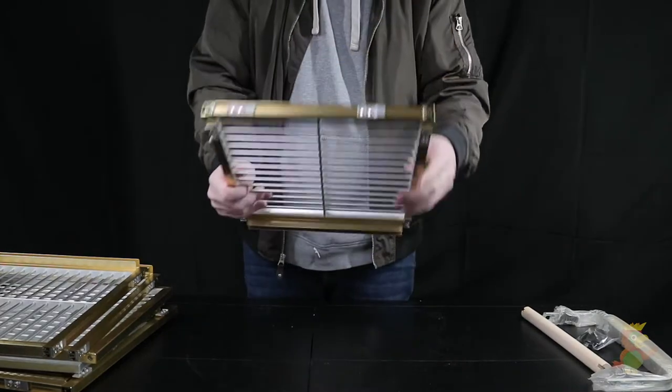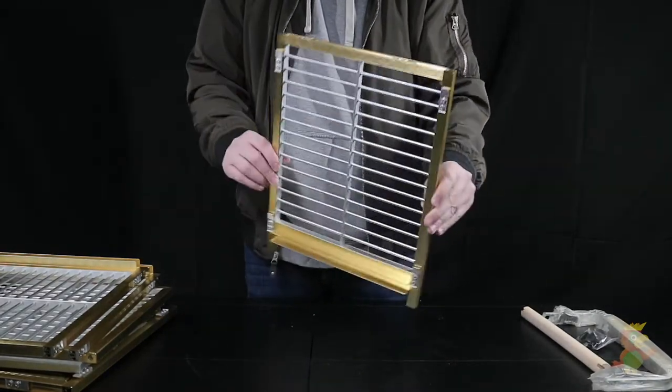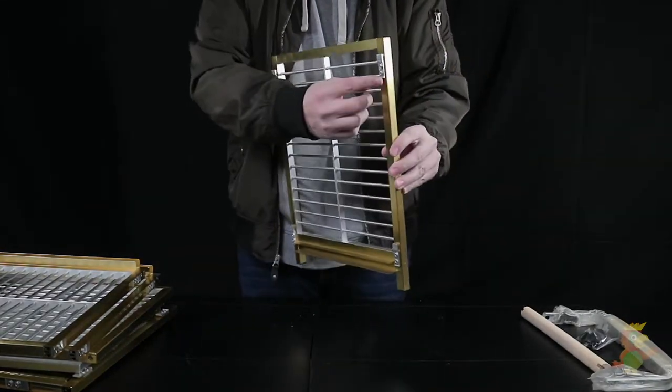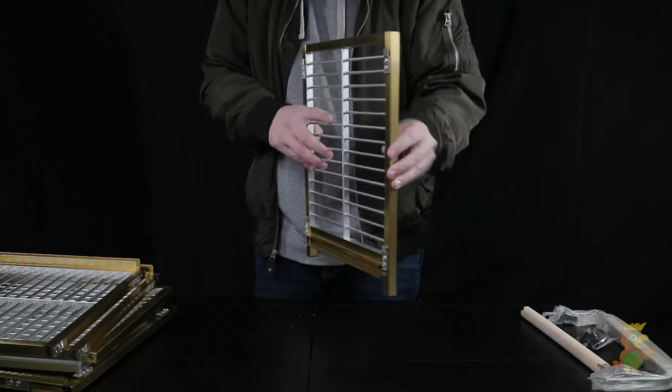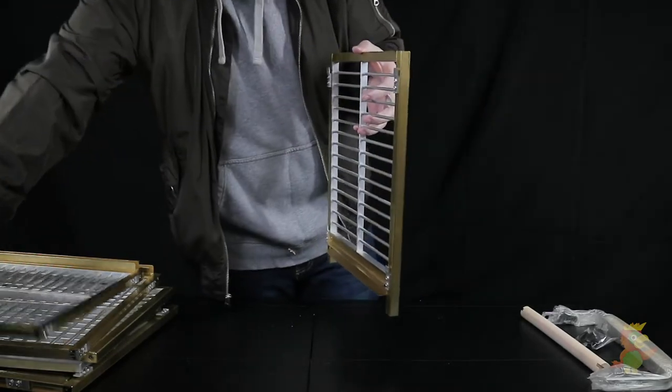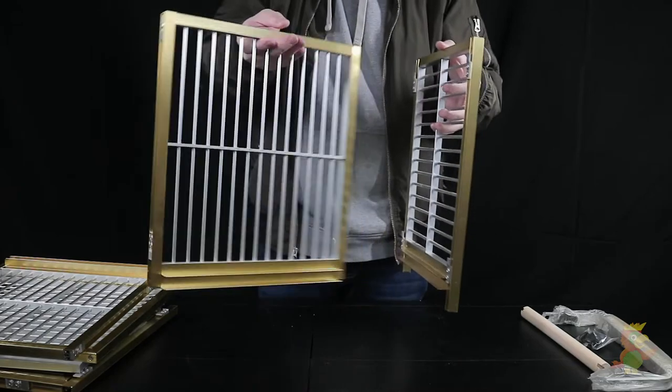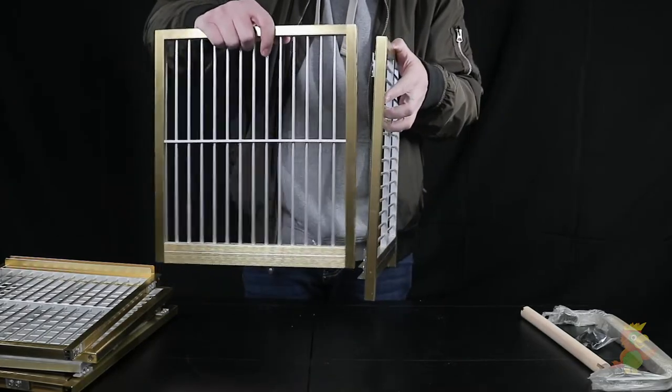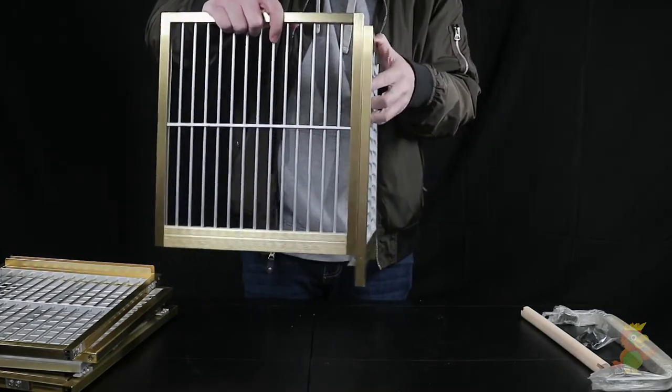To begin assembly, we need the back panel and locate the silver assembly hooks to determine the inside. Take one of your side panels and align the assembly hooks together and lock them into place by pushing down.